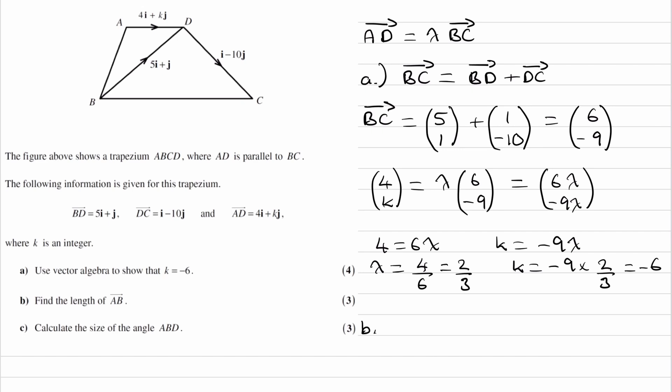For part B, we're trying to work out the length of AB. So do we have AB? No, we don't. We have AD, and then we have BD. So we first have to work out what the vector AB is.